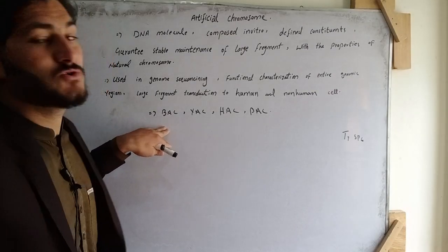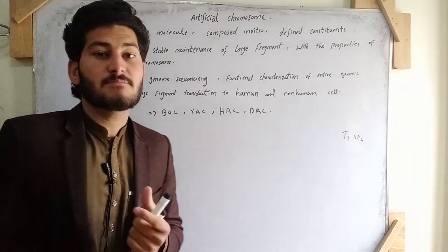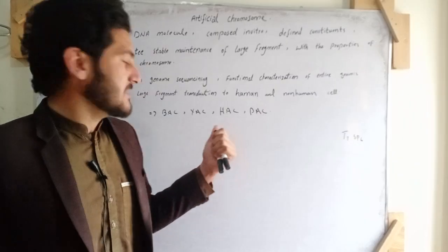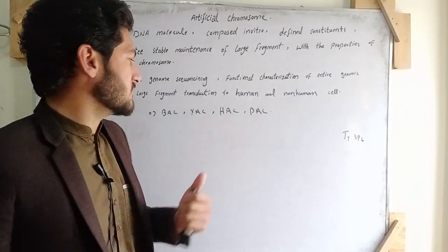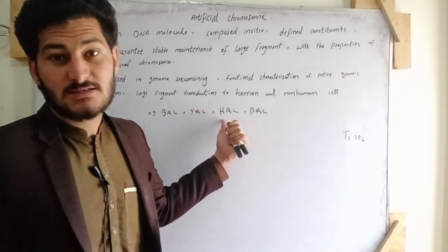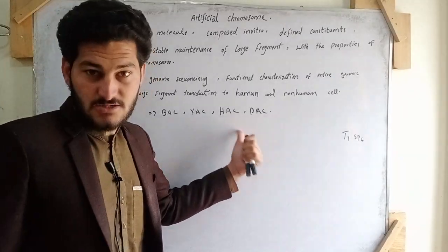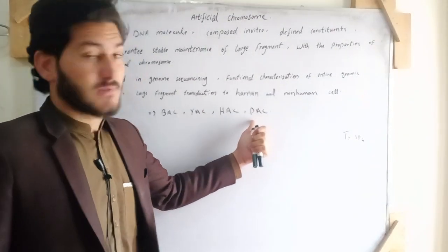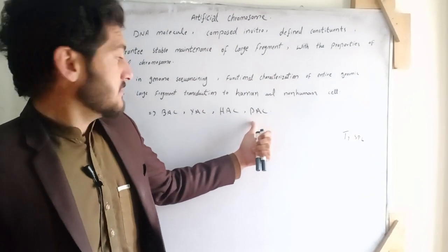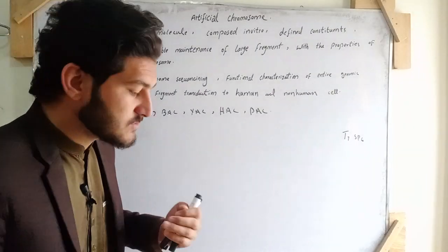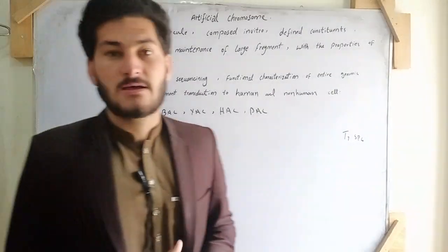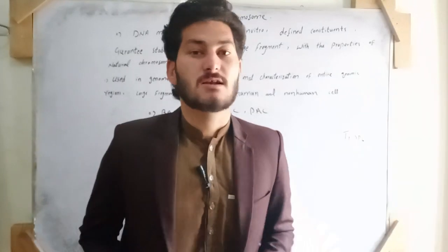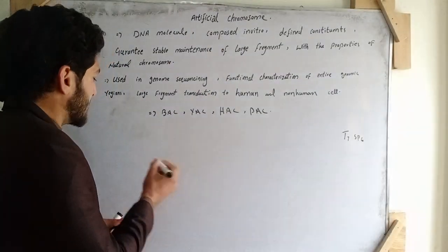Now let's explain the types of artificial chromosomes. The first type is BAC, which stands for Bacterial Artificial Chromosome. The second is YAC, which stands for Yeast Artificial Chromosome. And the third is PAC, which stands for Phage Artificial Chromosome.